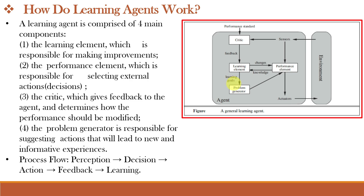Finally, the agent learns from the feedback. The performance element makes decisions using current knowledge. When the agent takes an action, the critic evaluates the result — for example, did the action lead to success or failure? This feedback is sent to the learning element, which uses it to improve future decisions. The problem generator helps the agent explore by suggesting new actions, even if they are not immediately optimal. In this way, the agent learns and discovers better strategies over time.